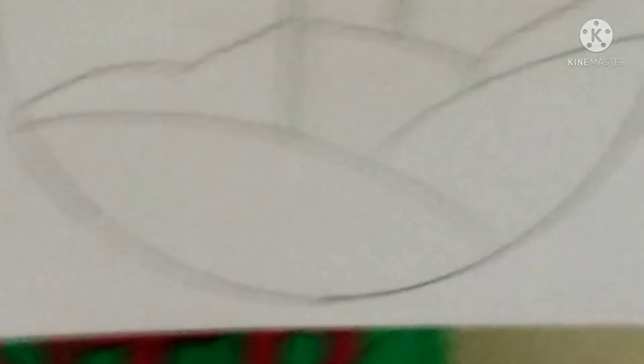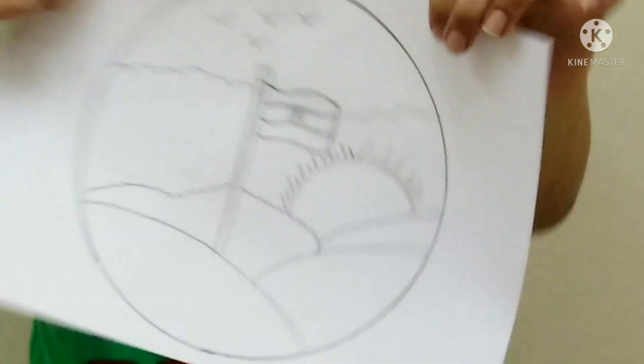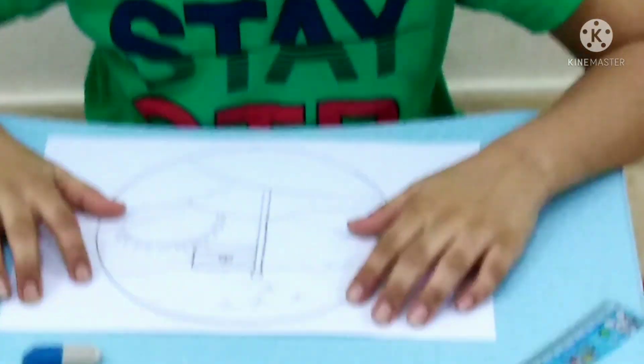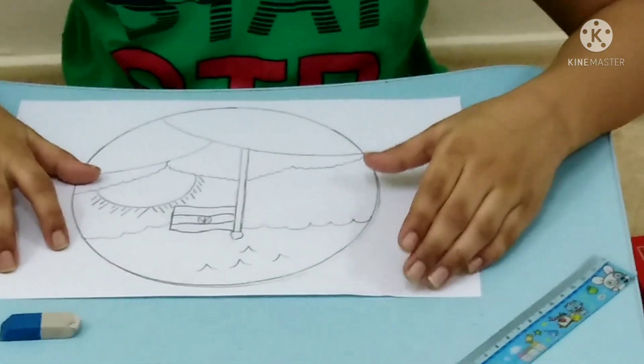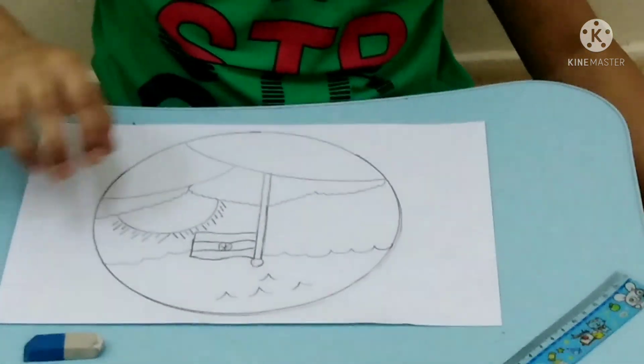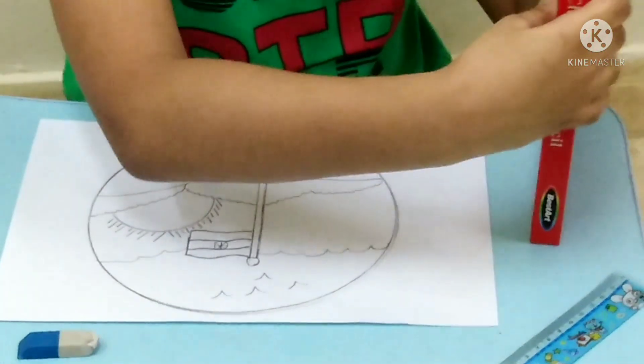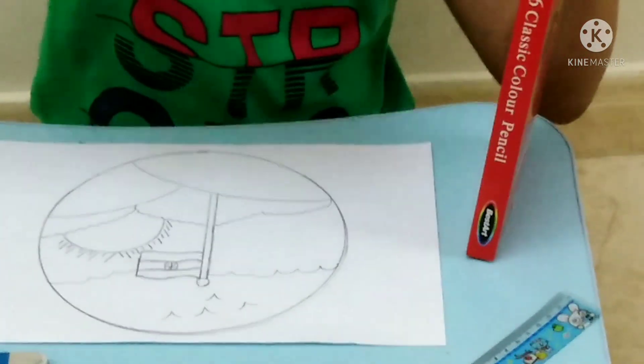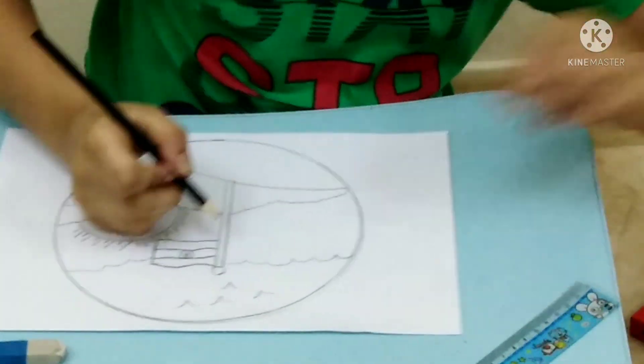Now see, now I'm going to color. First we need green for the grass. First let's give the outline for the clouds.